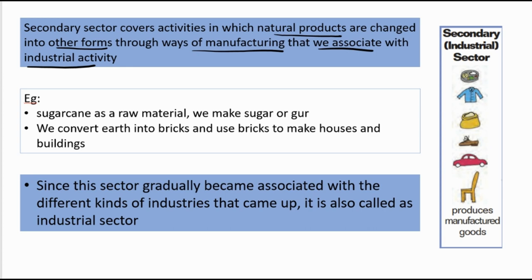For example, sugarcane as a raw material is made into sugar or jaggery. We convert earth into bricks and use bricks to make houses and buildings. Since this sector gradually becomes associated with different kinds of industries, it's also called the industrial sector.